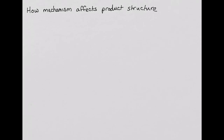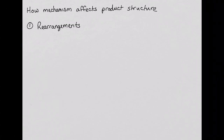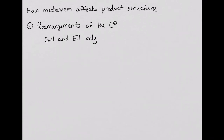Now we will discuss the differences between the mechanisms and how that can affect the structures we see in the products. The first thing we will consider is rearrangements. When we say rearrangements, we mean the rearrangement of the carbocation. Therefore, this can only occur in first-order mechanisms, because the carbocation is only formed in first-order mechanisms. In a substitution reaction, a rearrangement has occurred when substitution occurs at a different carbon than the one the leaving group was attached to. In elimination, a rearrangement has occurred when the double bond forms involving carbons different from the carbon that contained the leaving group.